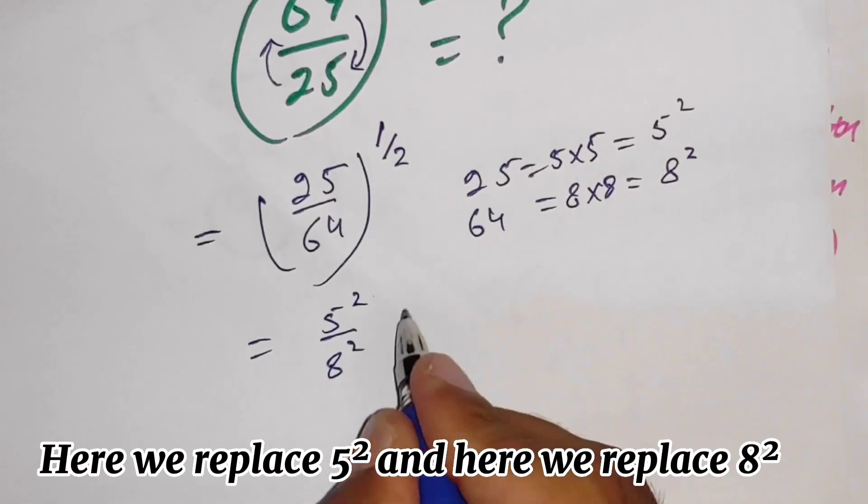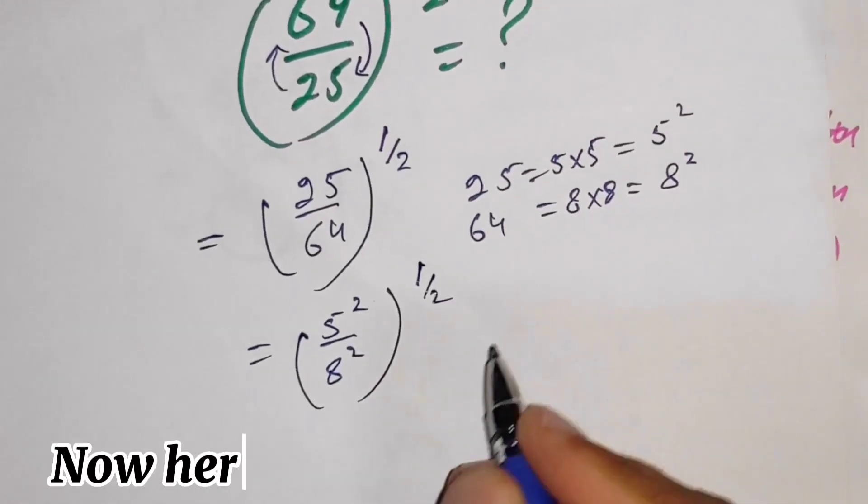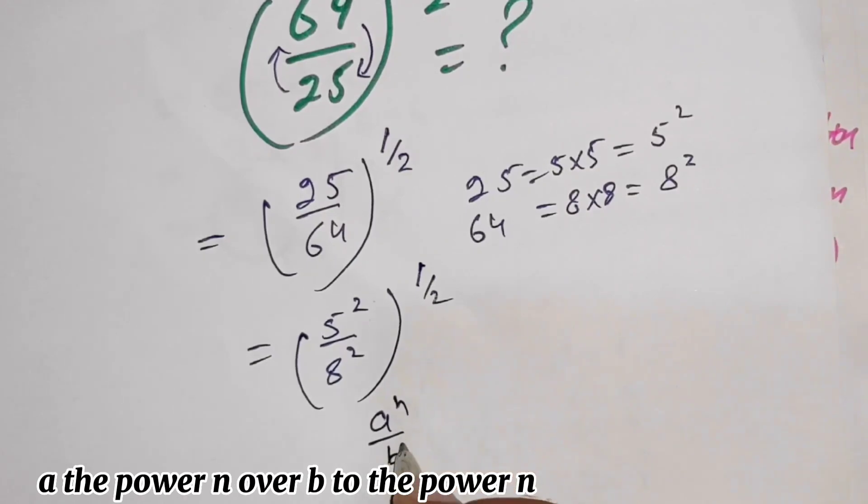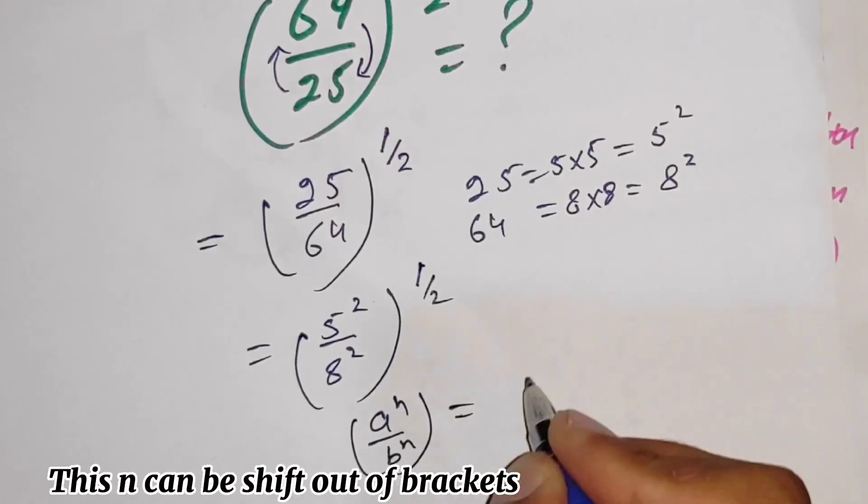Whole power 1 over 2. Now here we apply the exponent rule: a to the power n over b to the power n. This n can be shifted out of brackets.